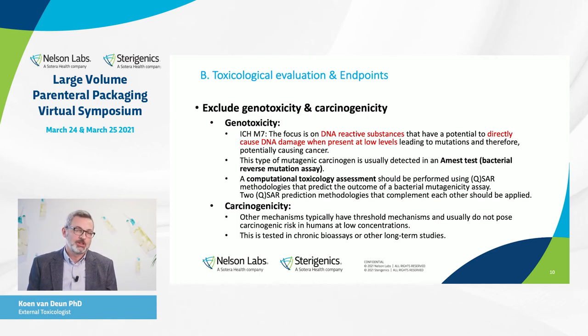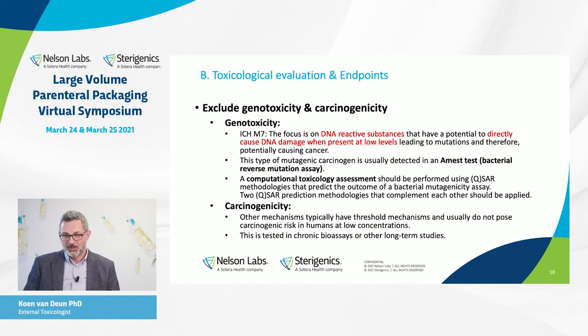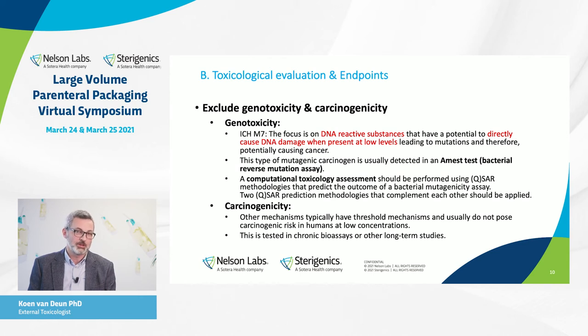The most critical endpoint is genotoxicity, which relates to carcinogenicity. Genotoxicity is defined in ICH guideline M7, which is typically used for impurities but is also used for leachables and extractables. ICH M7 is about potential genotoxic impurities in drug products — specifically about DNA reactive substances. To be more precise, the term should be refined to 'potentially mutagenic.' A typical assay for mutagenicity is an Ames test. However, ICH M7 allows the use of predictions — quantitative structure-activity relationships — which are very often used. If positive in a genotoxicity test or prediction, the substance is assumed to be carcinogenic and must be considered a potential carcinogen.